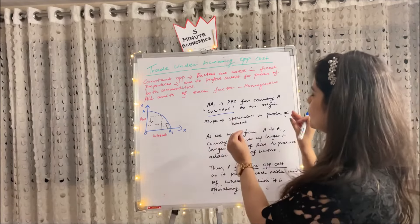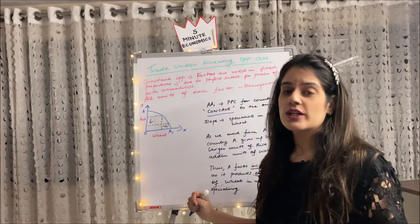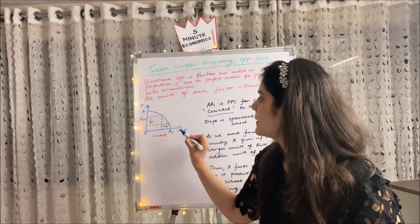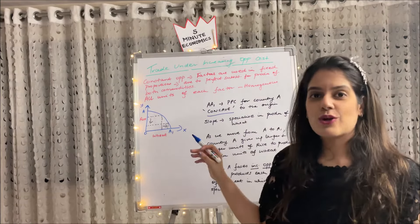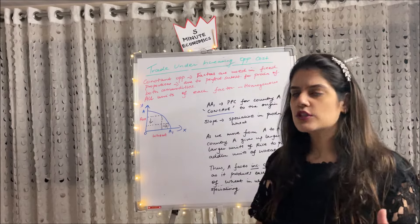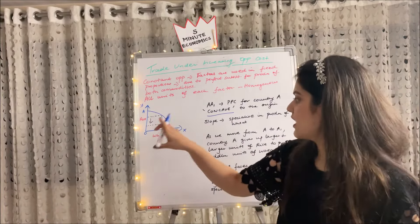So, coming ahead to increasing opportunity cost, firstly, look at the diagram. Now, you can see the shape of the PPC curve is different. We had a straight line, but here, our PPC curve is concave to the origin. Please make sure that you remember this because this is a question which can be asked in any MCQ also because the shape is concave, which you can clearly see for country A.